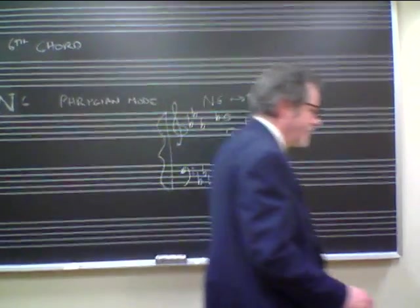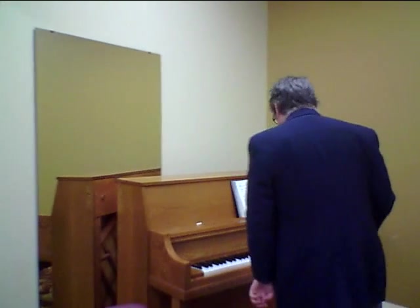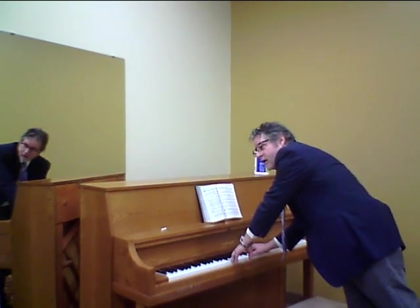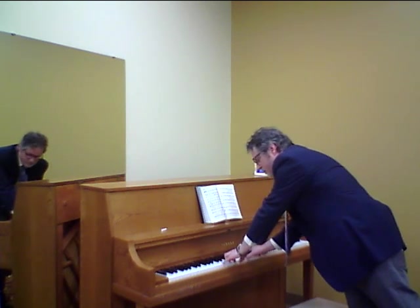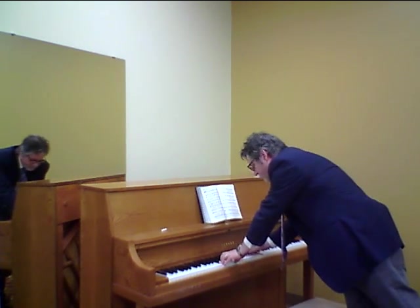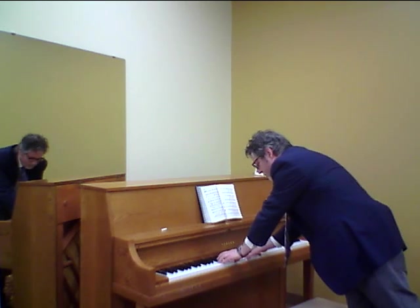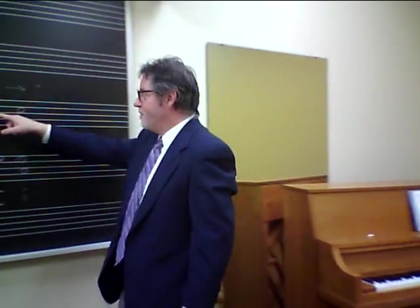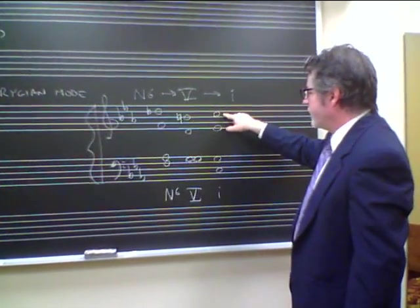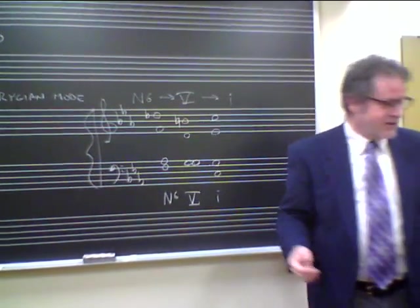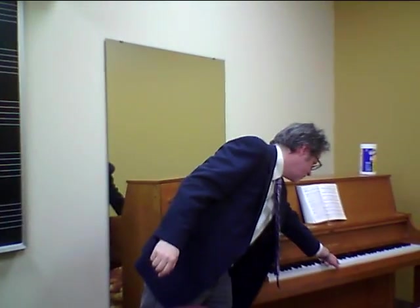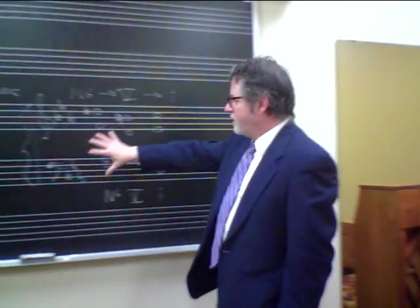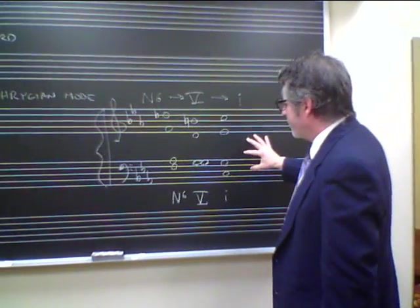Let me play it at the piano here. So in this case we have... [plays example] ...So it's Ra, Ti, Do — it's encircling the tonic note. And the bass, again, is this kind of fa, so, do. And so we have this nice, beautiful, colorful thing that happens.